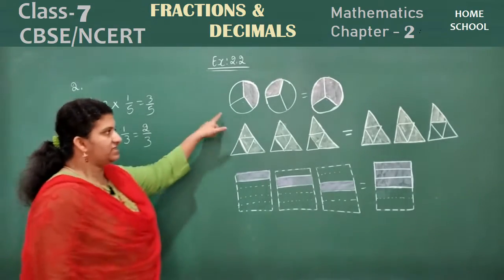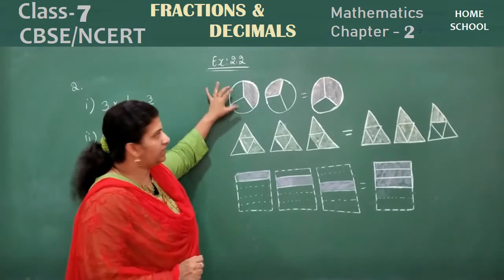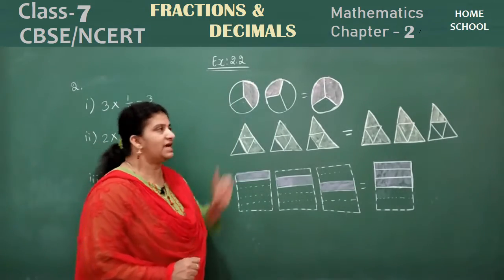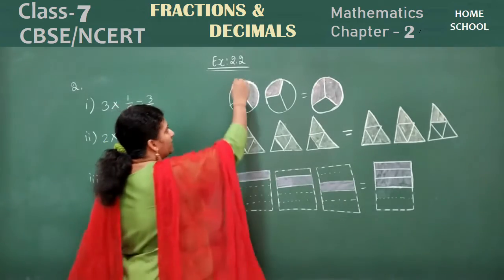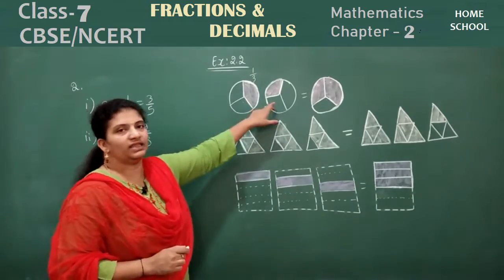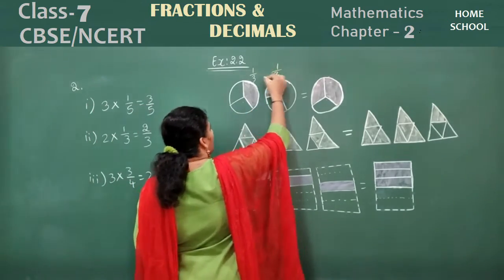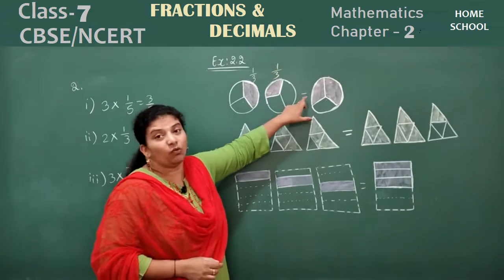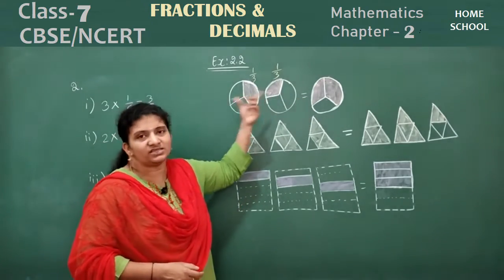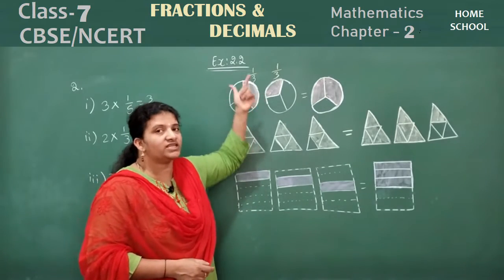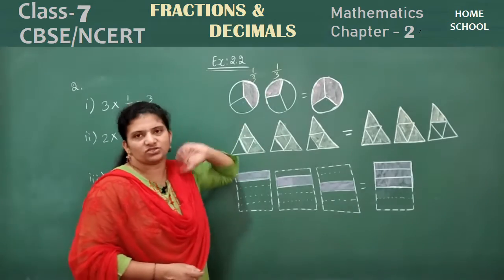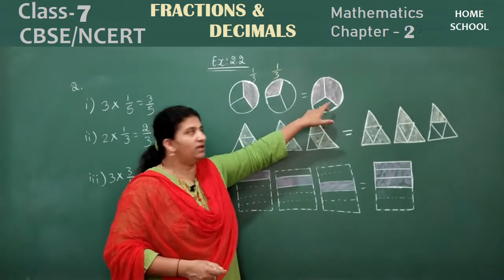Let's see the second main. Similar pattern. Observe these figures: this is a circle divided into 3 parts, the whole made into 3 parts, and one part is shaded — so the fraction is 1 by 3. Similarly this one is also 1 by 3. There are 2 such figures, so as in the first main, you write 2 into 1 by 3, which equals 2 by 3.